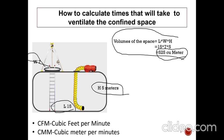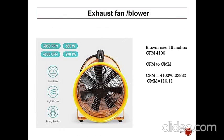Please remember these short forms given below. CFM means cubic feet per minute, and CMM means cubic meters per minute. The exhaust fan or ventilation blower we are going to use in the space is 15 inches in size. As per the manufacturer, the CFM of the 15-inch blower is 4100.